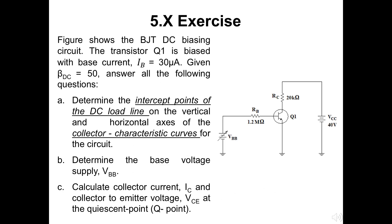In slide number 12, we will look at an exercise related to common emitter configuration BJT with biasing circuit. The transistor Q1 here is biased with base current IB equals 30 microampere. Given beta DC is 50, we need to answer all these questions below. Firstly, the intercept point of the DC load line, then about the VBB, and lastly about the IC and VCE.